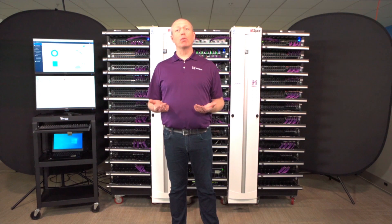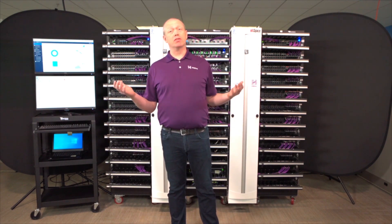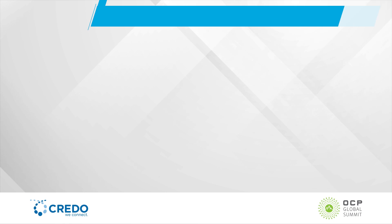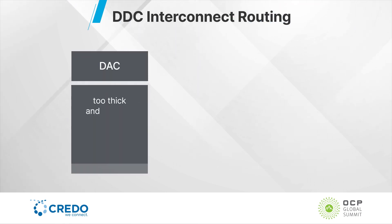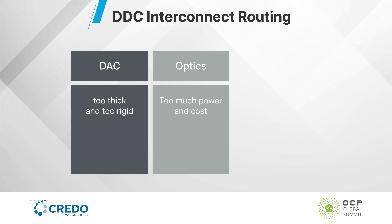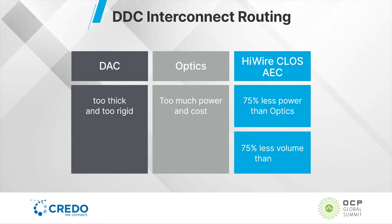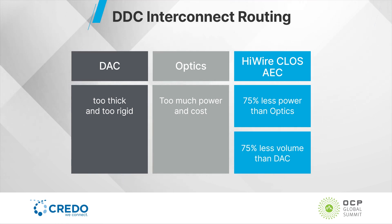The key difference between DVCs and traditional chassis is the way the interconnect is done. In a traditional chassis it would be a circuit board on the back of the chassis. In the DVC, as you can see behind me, it's done with cables. Traditionally there are two types of cables used: DAC cables, which are too thick to route at this density, and optics, which have way too much power. What you see here are high-wire class AECs — these have 75% less power than optics and take up 75% less volume than DACs.